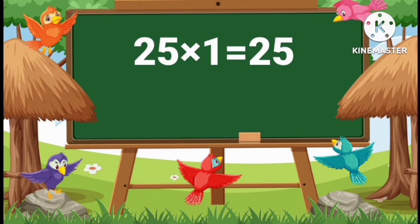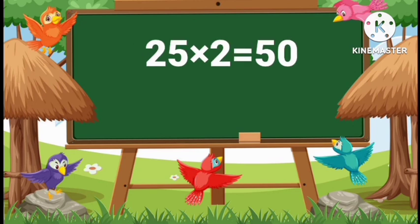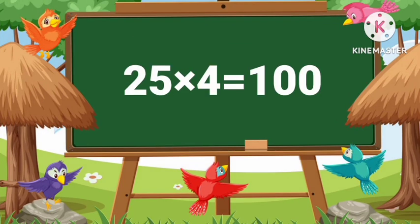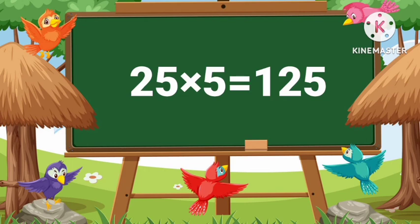25 ones are 25. 25 twos are 50. 25 threes are 75. 25 fours are 100. 25 fives are 125.